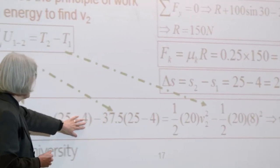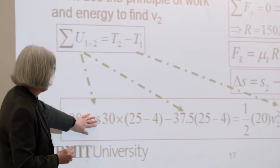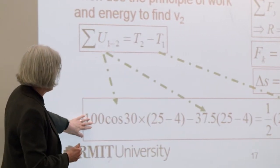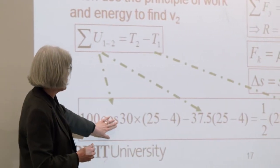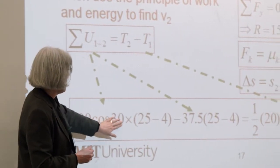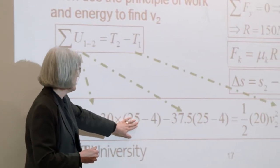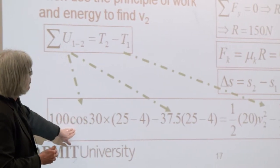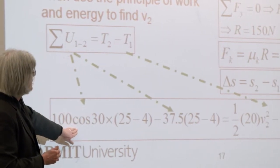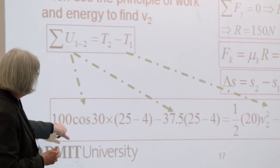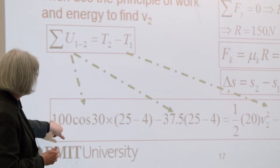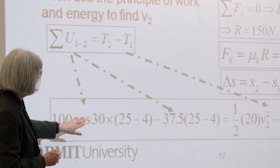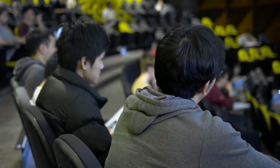And then on this side, we have the work done. So we've got force times displacement for the one that's doing work, so that's 100 cos 30 is in the same direction as our displacement, so that's positive. There's a lot of other things you can do to improve student learning.